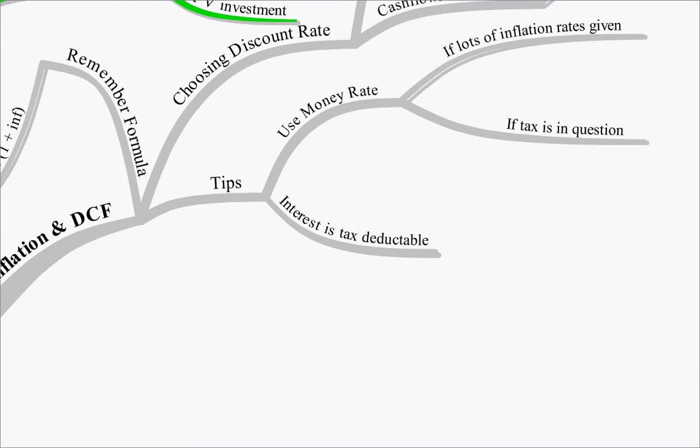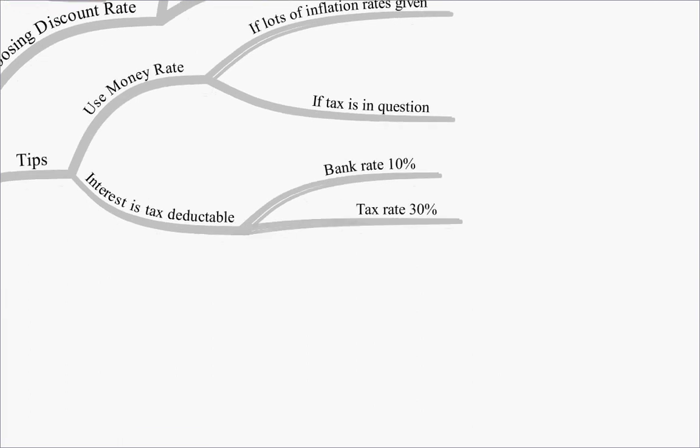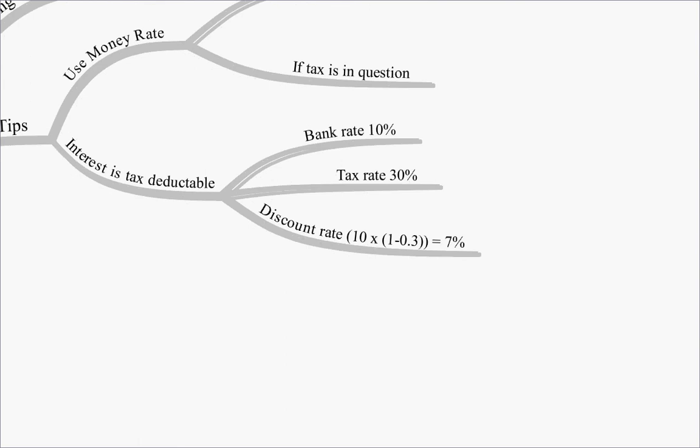Remember that interest is tax deductible, so for example, if it's bank interest, and the bank rate is 10%, and the tax rate is 30%, the actual interest paid will be 7%, because the interest is tax deductible. So, I'm going to leave it there, and we'll continue this mind map on our next session.